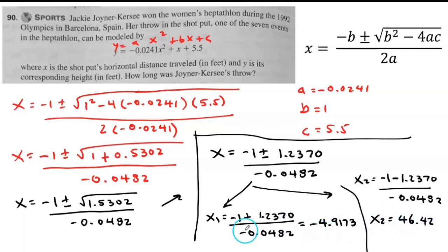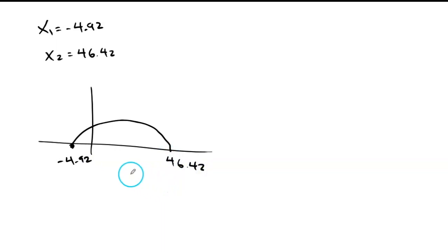So let me explain. I have one negative, one positive. What happens is the following: This is a lady, she's throwing the shot put. Negative 4.91, 46.42. So most likely what happened is this is the movement. This is negative 4.92 and this is 46.42.